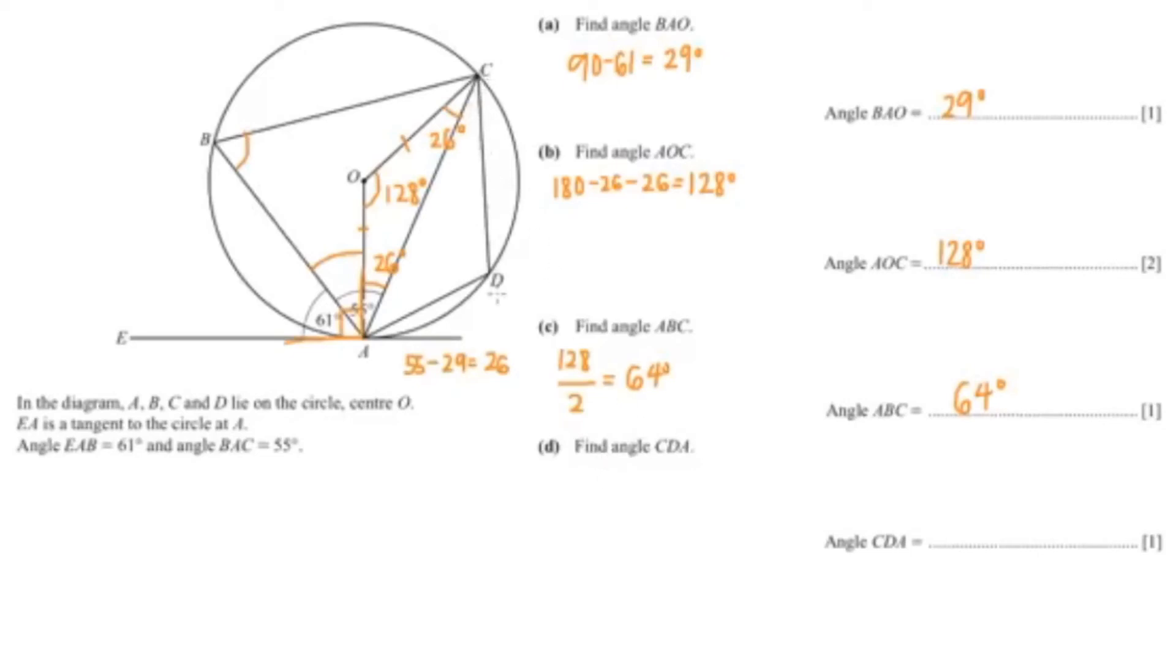And angle CDA is right here. So I'm going to find this angle. To find this angle, I would just do 360 minus 128, and that is 232.